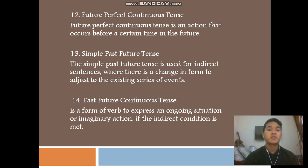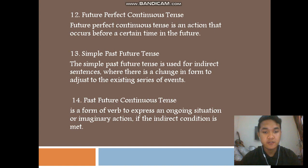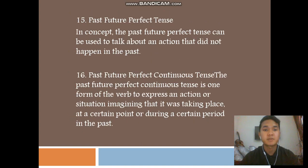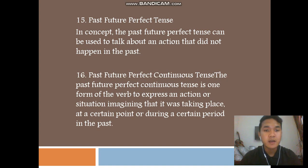Number fourteen: past future continuous tense. The past future continuous tense is a form of verb used to express an ongoing situation or imaginary action in an indirect condition. Number fifteen: past future perfect tense. The past future perfect tense is a form of verb used to express an action or situation imagining that it was taking place, and can be used to talk about actions that did not happen in the past.